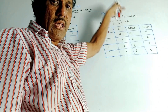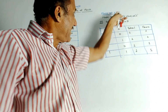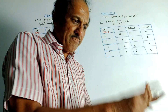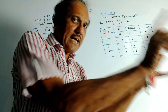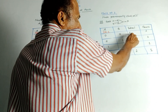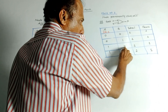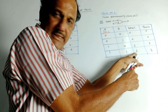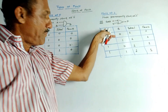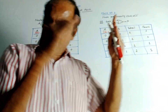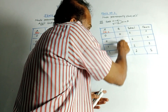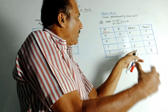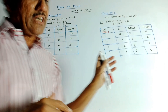Similarly, stuck at 1 fault means the node permanently remains at logic 1. Consider an example of an OR gate with two inputs A and B and output F. In an ideal OR gate, if any one of the inputs is high, output is high. The truth table gives: 00→0, 01→1, 10→1, 11→1. Now suppose input A is stuck at logic 1 — its value permanently remains at 1. Then irrespective of the value of B, the output will always be 1. Even if you change B, output remains 1. This is called stuck at 1 fault.